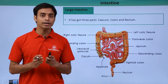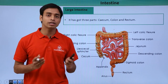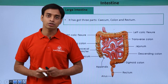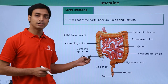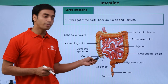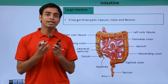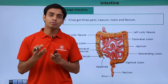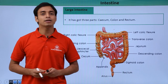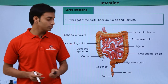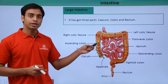They are vestigial in function as they are not involved in cellulose digestion. It is believed that the cecum and the vermiform appendix provide space for some symbiotic microorganisms to stay. Followed by the cecum is the colon.